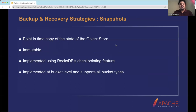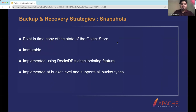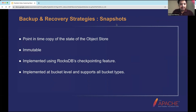Coming to the snapshot feature recently introduced in Ozone — a snapshot is a point-in-time copy of the state of the object store. It is immutable and currently read-only. Snapshots are implemented using RocksDB's checkpointing feature, which provides the ability to take snapshots of a RocksDB database. A RocksDB checkpoint creates a consistent copy of the current DB state by hard-linking existing SST files, and the checkpoint can be opened in read-only mode to query the point-in-time state.